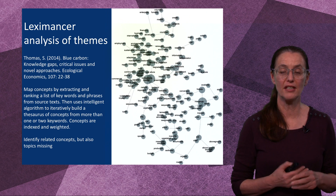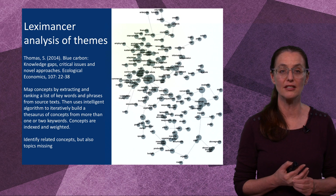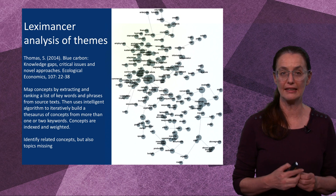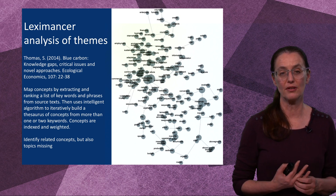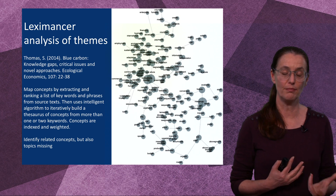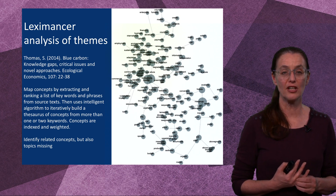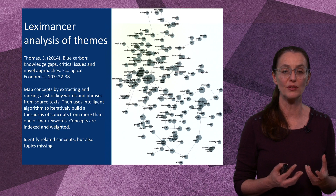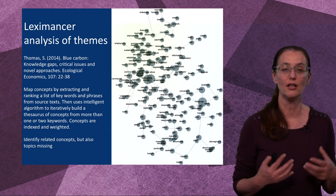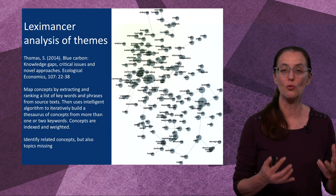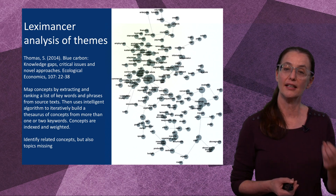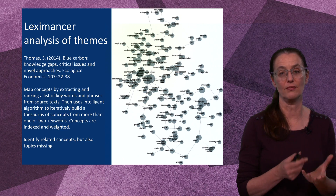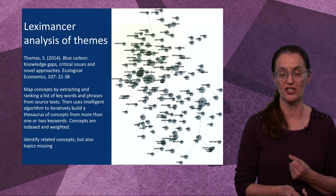You can go beyond the systematic quantitative literature review to also include other methods. For example, one paper not only quantified the literature but also mapped the themes using Lexi Mansa. Using the programming within that package, it extracted and ranked a list of keywords and phrases from the source text, then used that intelligent algorithm to build a thesaurus of concepts for more than one or two keywords, indexed and weighted it, and explained it as a diagram — really important for seeing how the concepts relate to each other. That's what all three types of multi-dimensional analysis examples are doing.